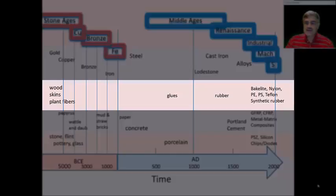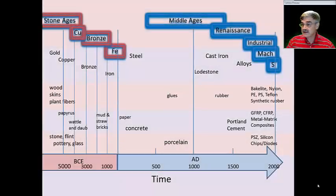And as we saw in a recent chapter, man then developed synthetic polymers: bakelite, nylon, polyethylene, polystyrene, teflon, synthetic rubber.